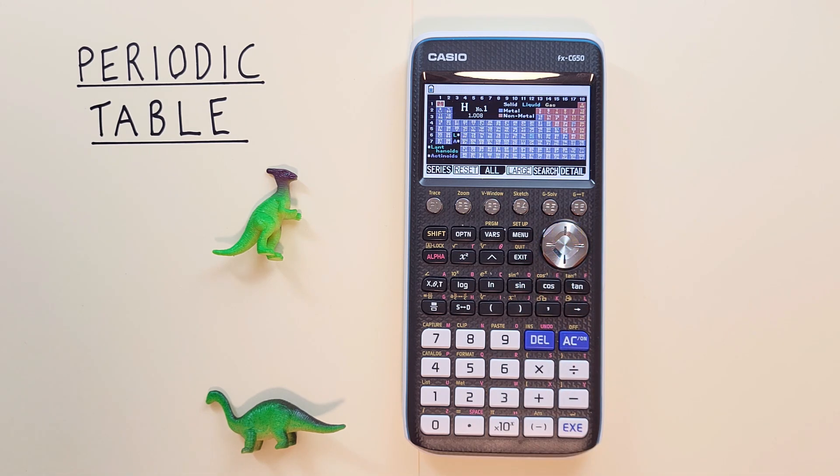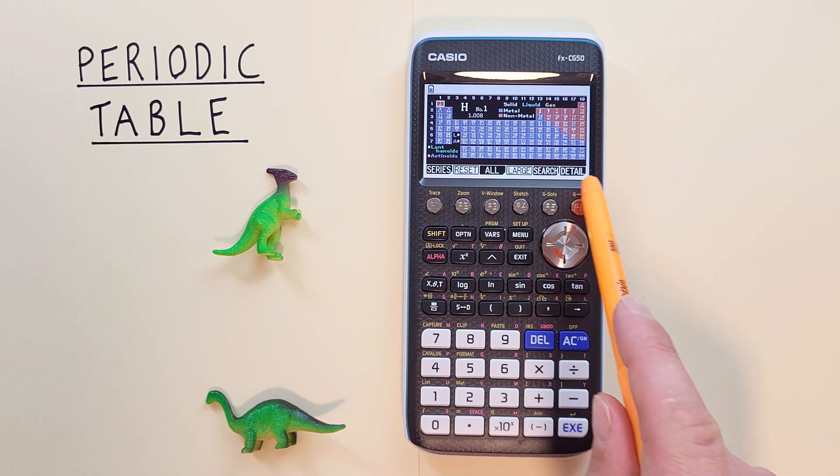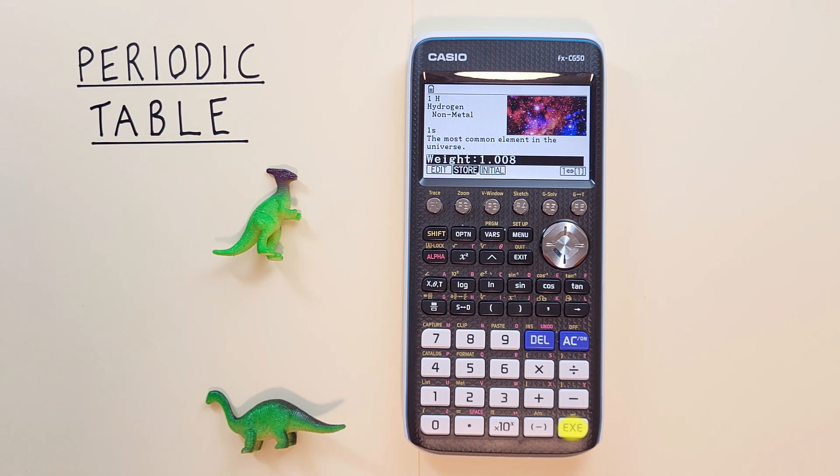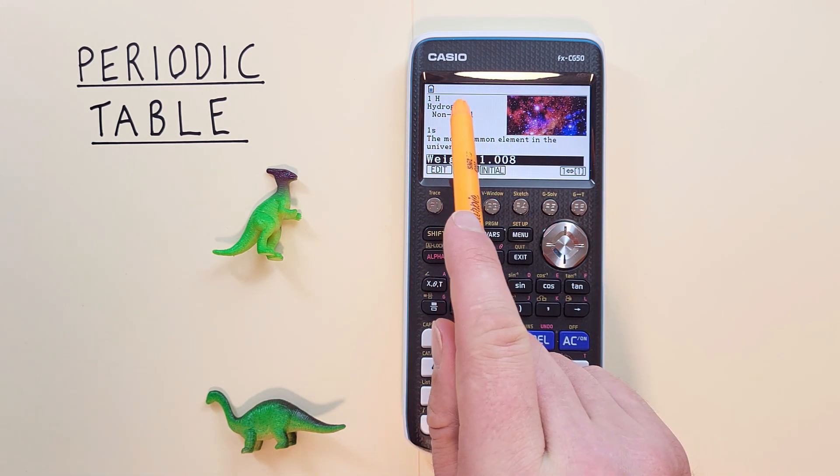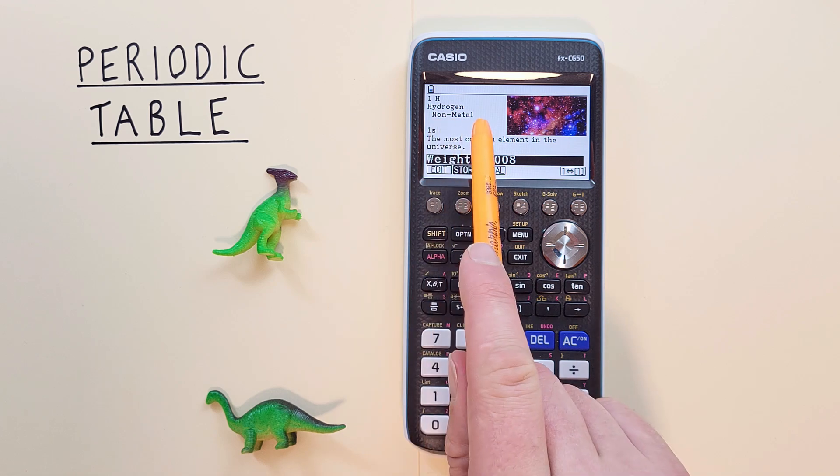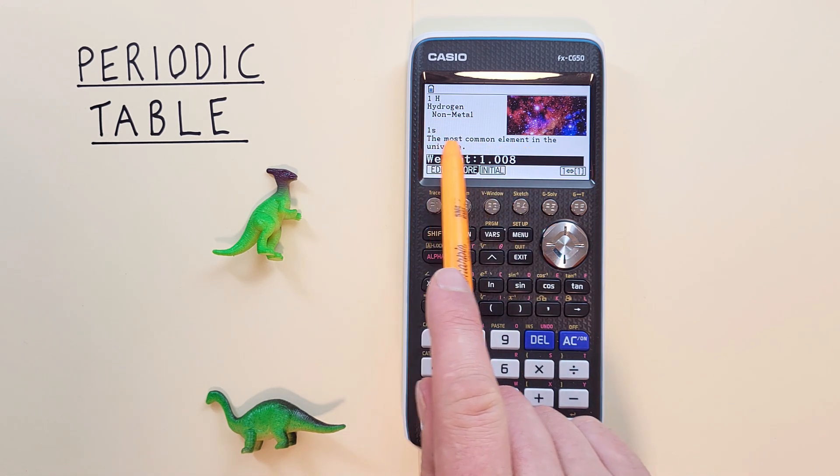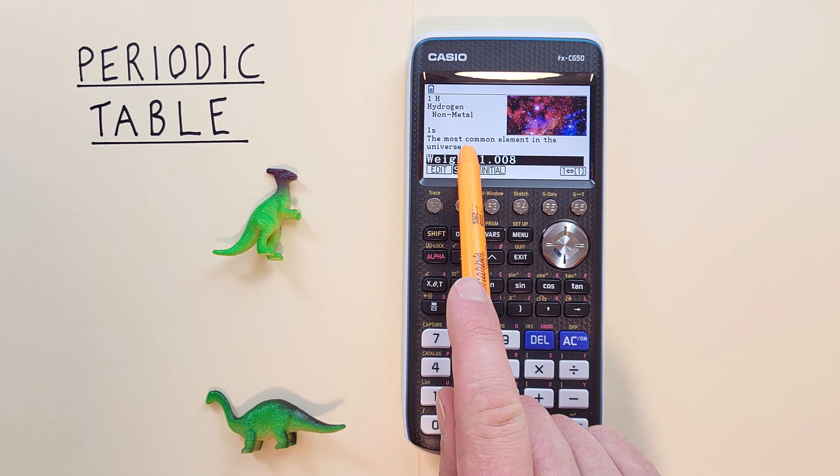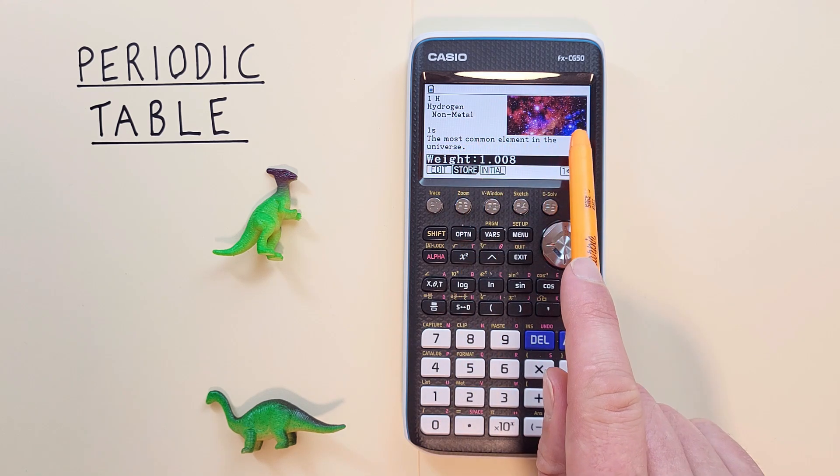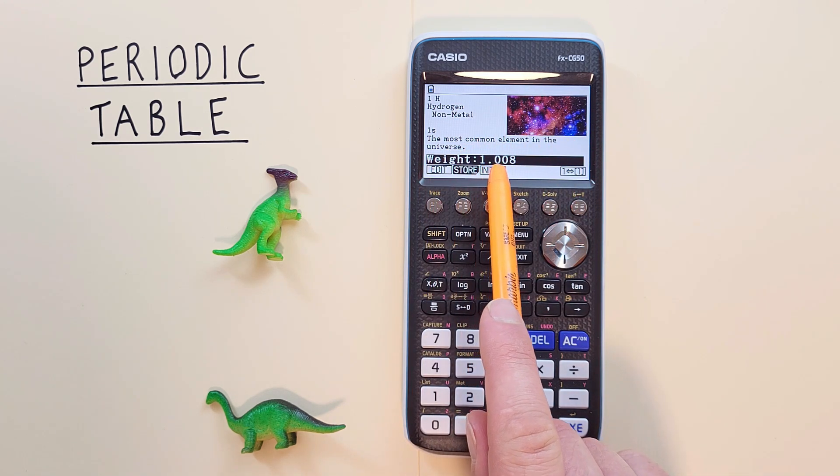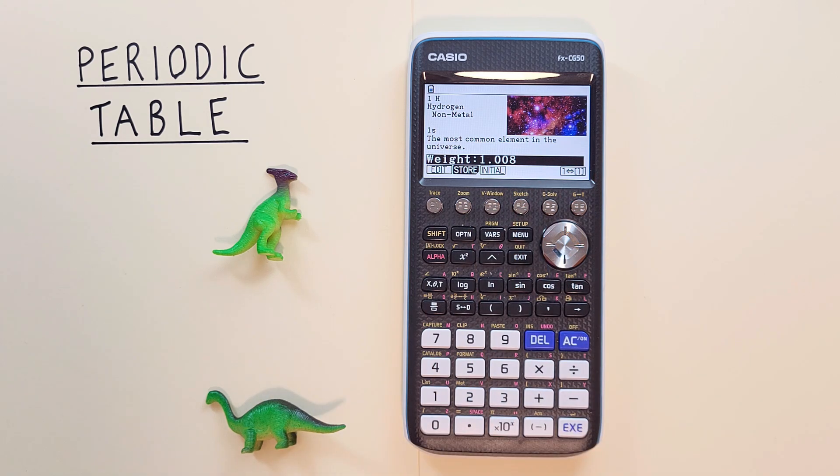If we're highlighting one and want to know more about it, we can either hit F6 for detail or just hit EXE, which will bring up a screen that looks like this. And we see number 1, H, is hydrogen, a non-metal, and here's a little fun fact, the most common element in the universe. It gives us a little picture here and a weight of 1.008. To go back to the table, we can just hit EXIT.